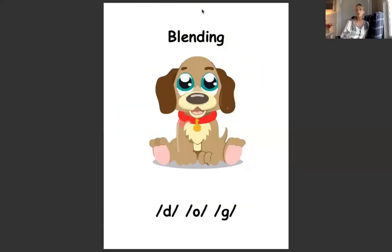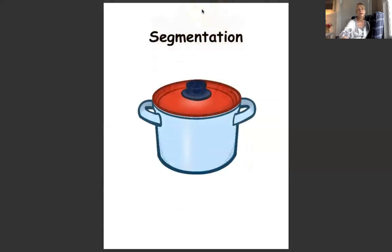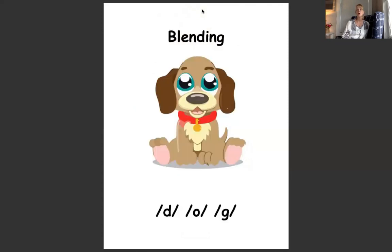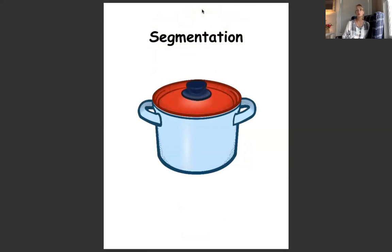The third skill is blending, or making words from isolated sounds — for example, what is the word /d/ /aw/ /g/? The fourth skill is segmentation, which is separating a word into its individual sounds — for example, how many sounds are in the word pot, and what are those sounds?